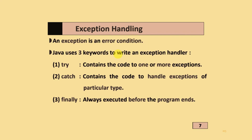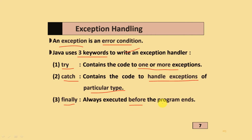Exception handling: in Java, three keywords are used to write an exception handler. The first one is try, which contains code prone to one or more exceptions. The second is catch, which contains the code to handle exceptions of a particular type. And finally, which is always executed before the program ends.